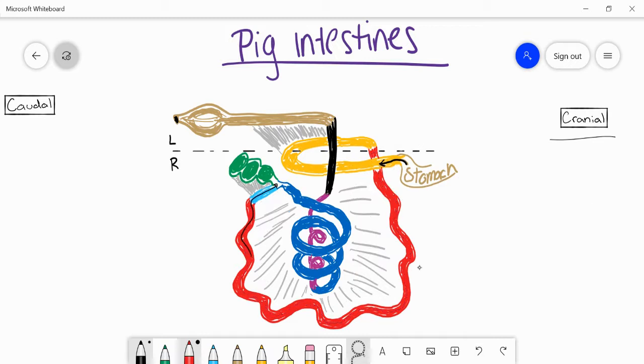Once it leaves the ileum, it's now leaving the small intestine. Some of it is going to go into the cecum here, but the majority of the flow is going to go towards the ascending colon, which I have in the navy blue.